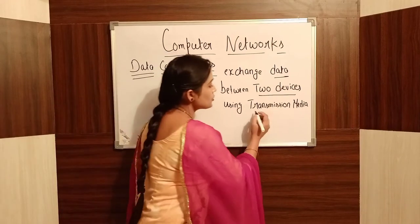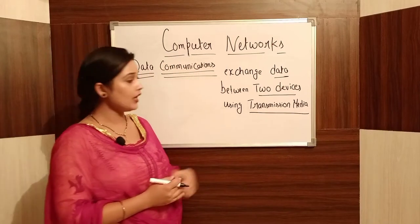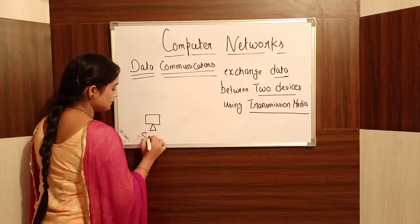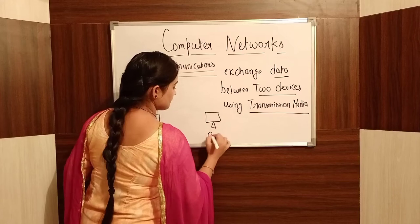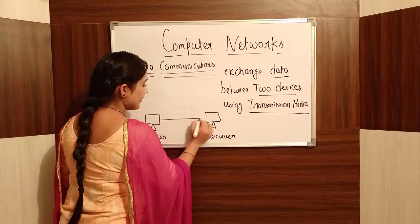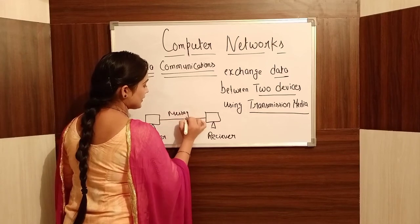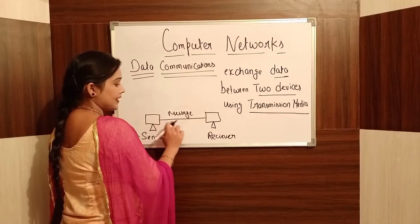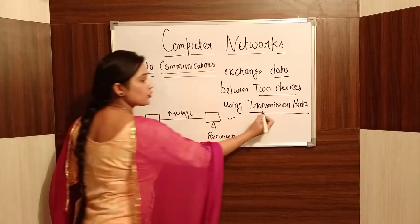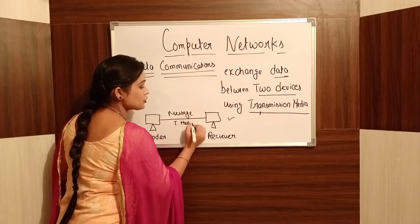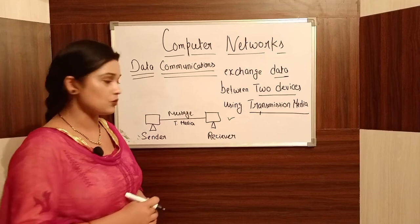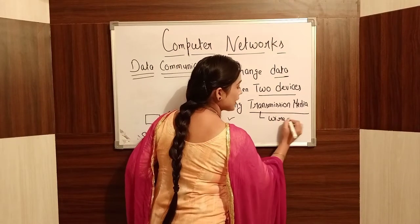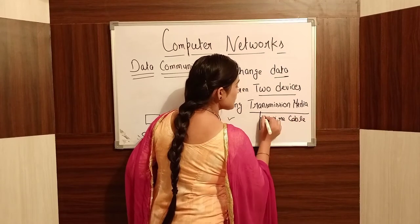What is the method used for transmission media? Transmission media is used to transfer or exchange data. Suppose we have one sender and one receiver. The sender sends a message, and that message is sent to the receiver following a method. That method is called transmission media — the medium used when a message is transferred to another device. Transmission media can be a wire cable or a wireless connection.